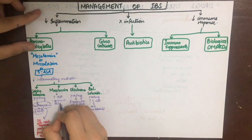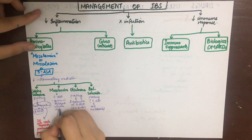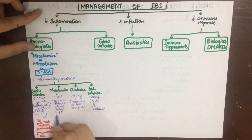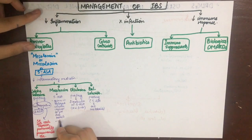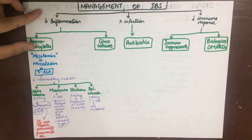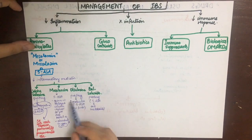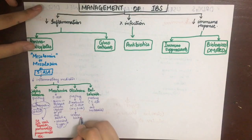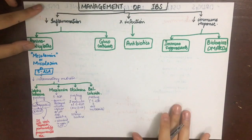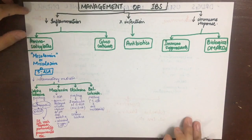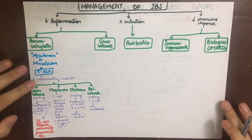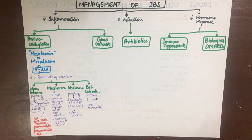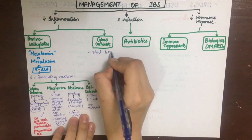Mesalamine is given in delayed-release capsules or pH-dependent tablets so that its active form is released in the colon and not absorbed in the upper GIT. Olsalazine is converted by colonic bacteria to its active form, and so is balsalazide.